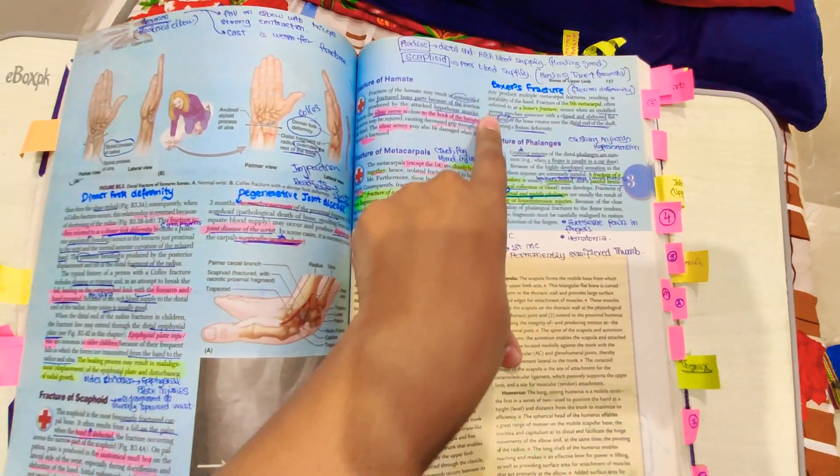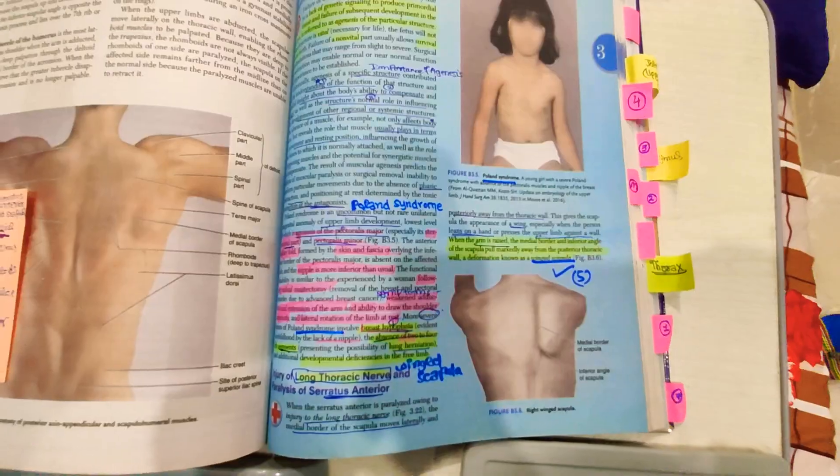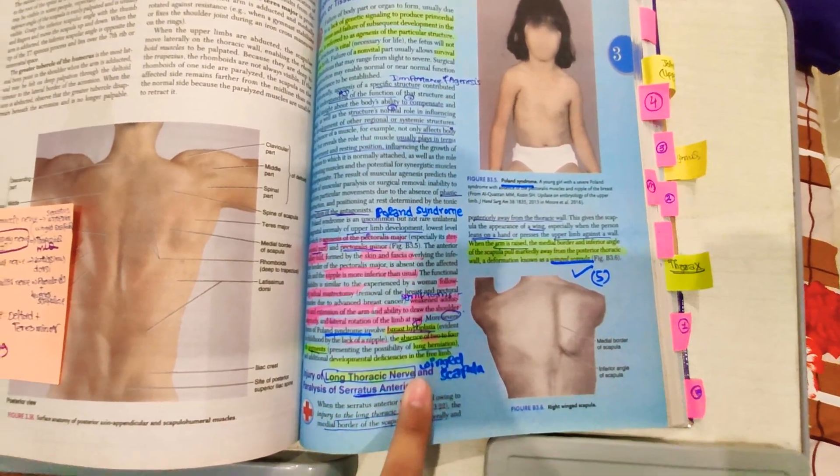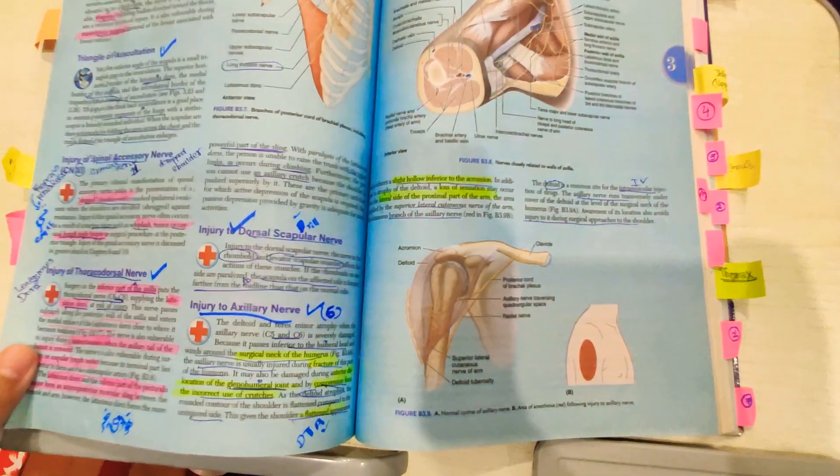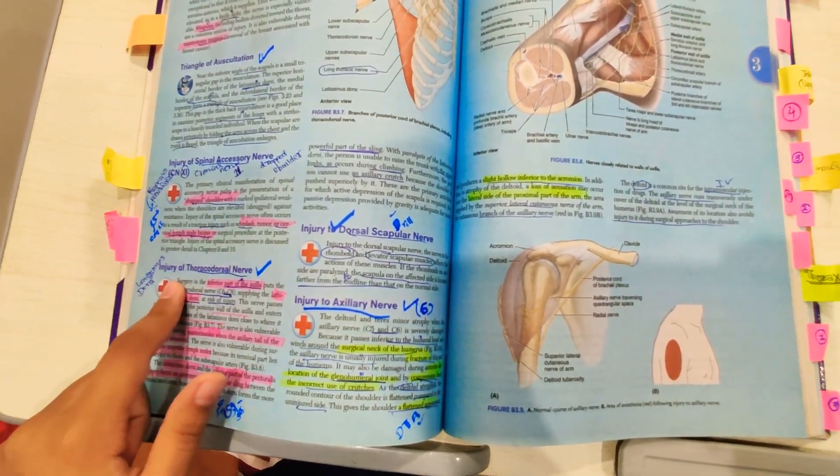Then you have to do boxer's fracture and Bennett fracture, then Poland syndrome, winged scapula and triangle of auscultation, and then injury of thoracodorsal nerve.